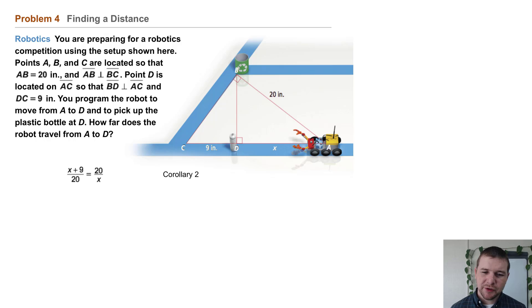We can use corollary 2 to set up the proportion x plus 9 over 20 equals 20 over x. And then we solve.